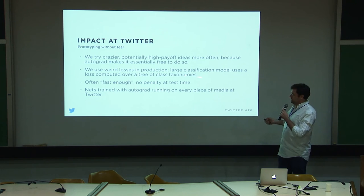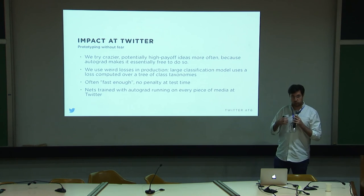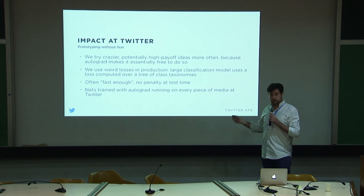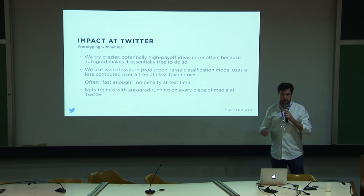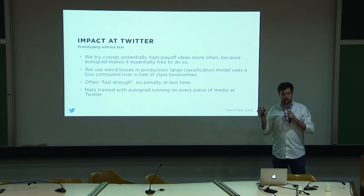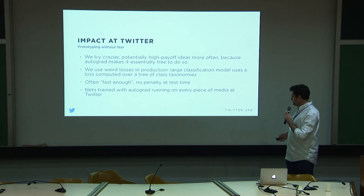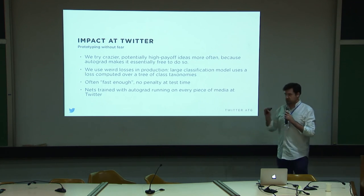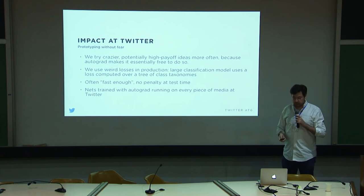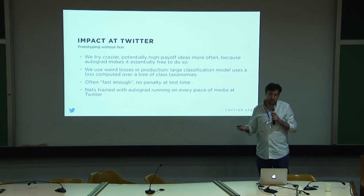This whole system is often fast enough. There is a speed penalty because we've written an interpreter inside Lua to do this operation. But there's no penalty at test time — your code goes back to regular Torch code as soon as you stop using Autograd, once your weight matrices are trained and loaded in. Networks trained with Autograd are touching every piece of media running at Twitter. If you've used Twitter, you've in a sense used Autograd.